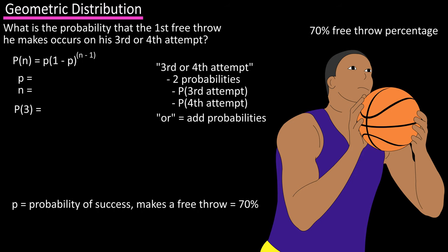we need to find small p and n first for the third attempt. We know that small p is the probability of success, that he makes a free throw, and that is given 70%. And n is equal to three, because we're looking for the first success on the third free throw attempt.